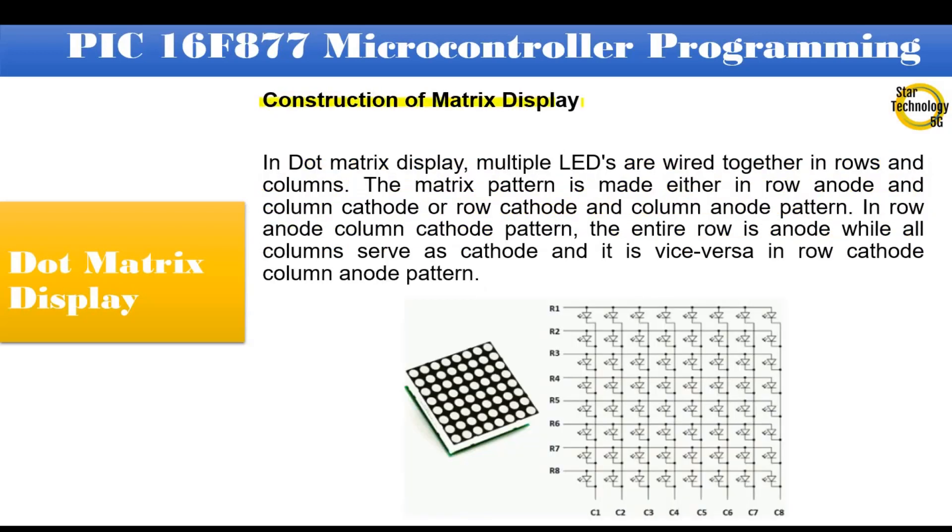Construction of matrix display. In dot matrix display, multiple LEDs are wired together in rows and columns. The matrix pattern is made either in row anode and column cathode or row cathode and column anode pattern. In row anode and column cathode pattern, the entire row is anode while all columns serve as cathode and it is vice versa in row cathode column anode pattern.